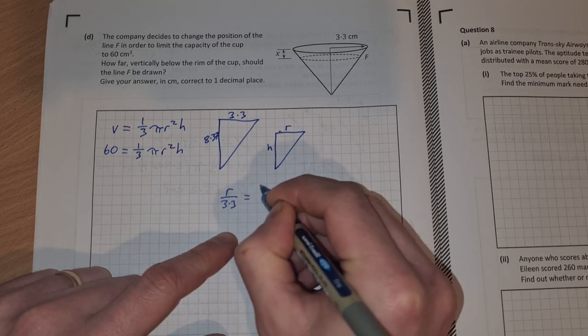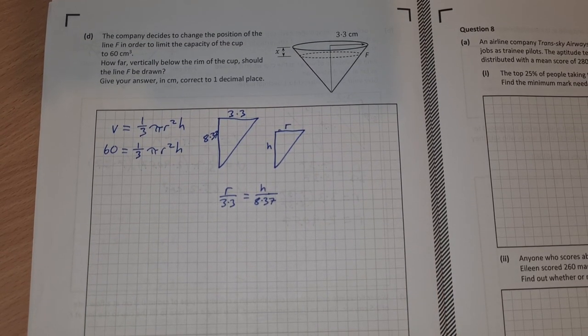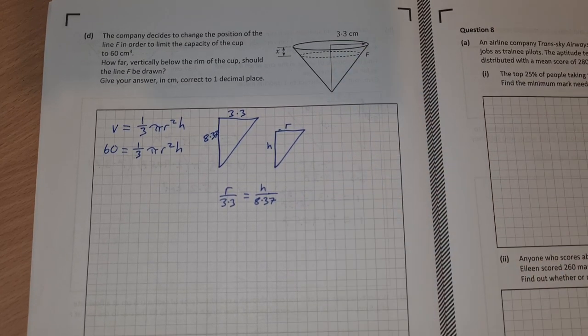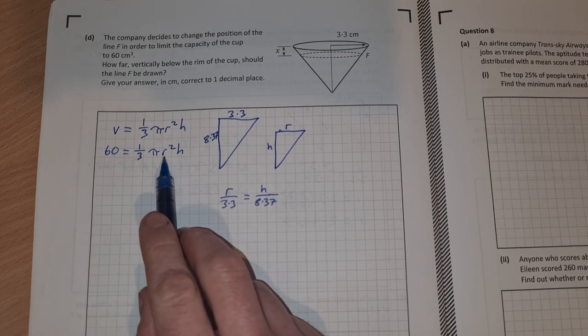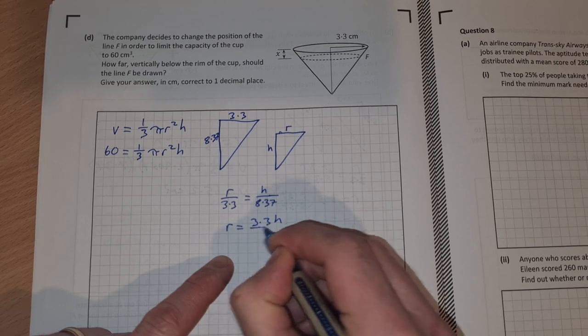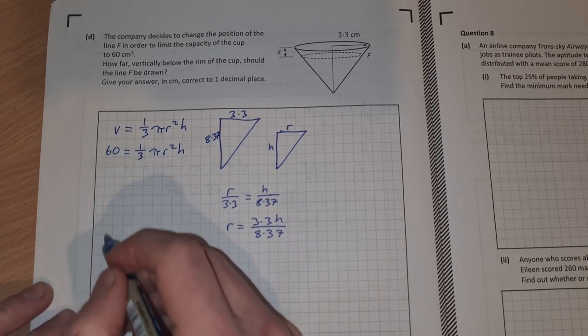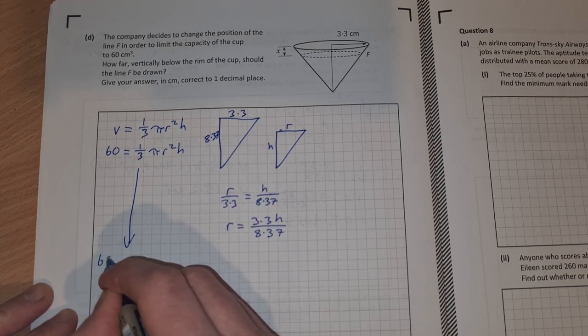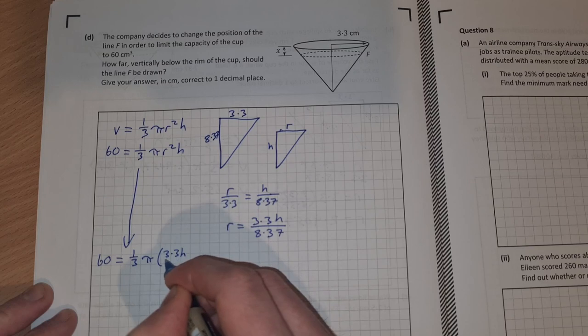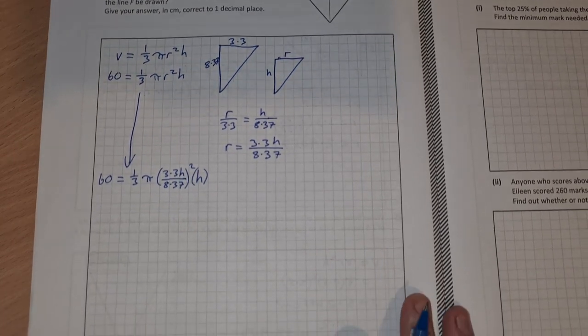We're looking for this height here. In order to find what this distance is, we want to write r in terms of h so we can replace this r with an h and solve for h. If we want to write r in terms of h, r equals 3.3h over 8.37. Now what we can do is sub this in here and solve for h. So we have 60 equals ⅓π. Now instead of r we have 3.3h over 8.37, that's all squared, and it's multiplied by another h.